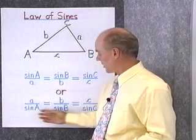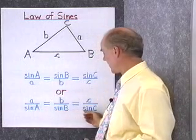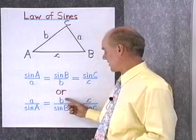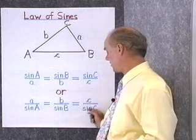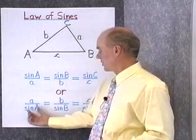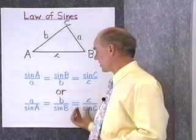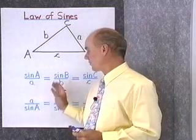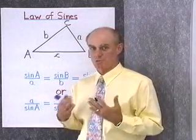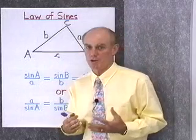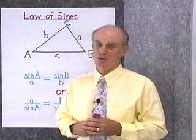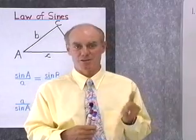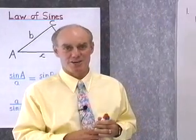We can also write the Law of Sines this way if it's convenient: a over sine A equals b over sine B equals c over sine C. These are constants in every triangle whatsoever. For the derivation, you'll need to look in the book. What we want to do here is work a few problems that involve the Law of Sines.